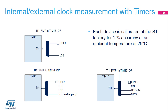Concerning HSI16 and MSI, RC oscillator frequencies can vary from one chip to another due to manufacturing process variations. This is why each device is calibrated at the ST factory for 1% accuracy at an ambient temperature of 25 degrees Celsius. After reset, the HSI16 and MSI factory calibration value is automatically loaded. If the application is subject to voltage or temperature variations, software can perform clock trimming.